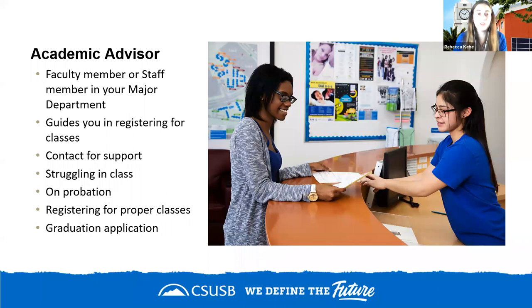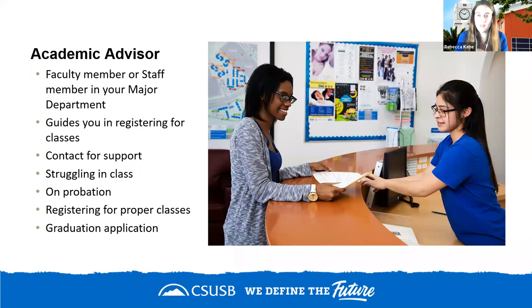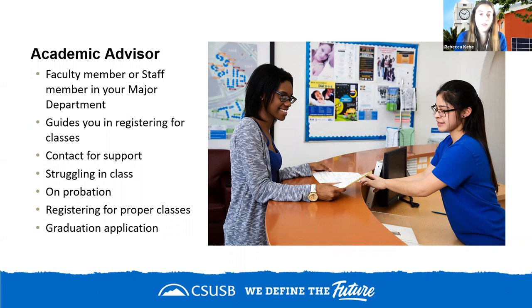If you go on academic probation — which typically means your GPA has fallen below a 2.0, roughly below 65-70% — your academic advisor will be your point of contact. They'll walk you through what you need to do to be released from probation, or explain the consequences if you cannot. They are also typically your point person for your graduation application.